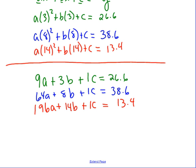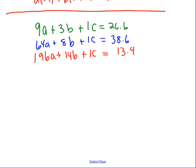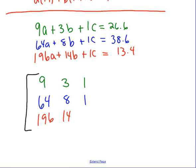So now I'm going to rewrite this. I have 9a plus 3b plus 1c equals 26.6. So that's 64a plus 8b plus 1c equals 38.6. And 196a plus 14b plus 1c equals 13.4. So now, how we solve for a, b, and c, there are a variety of ways. We could solve for one variable, plug it in, find another, but that's going to be pretty difficult to do. So last year, we looked at matrices a little bit, and that's what I would recommend you do here as well. So remember when you deal with matrices, you put the coefficients in, and those are just the numbers in front of your variables. So in the first one, it's going to be 9, 3, and 1. In the second one, we're looking at 64, 8, and 1. And in the third equation, we have 196, 14, and 1. And we're going to call this matrix A.